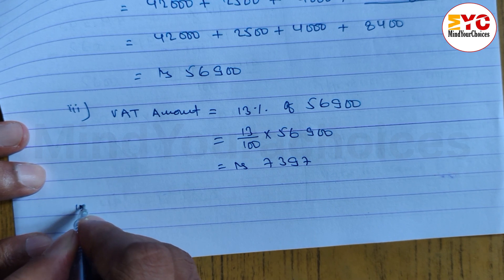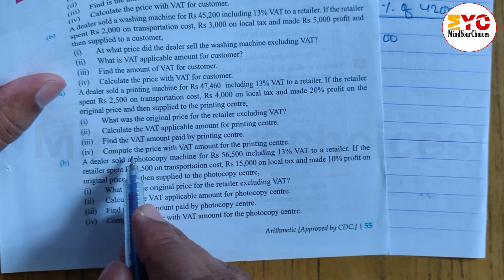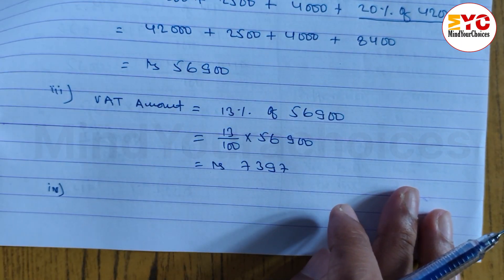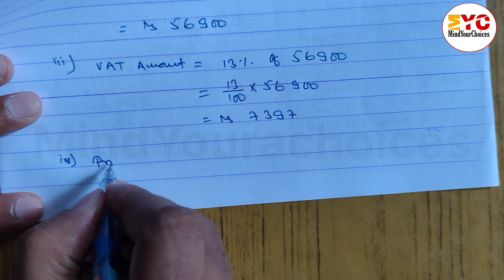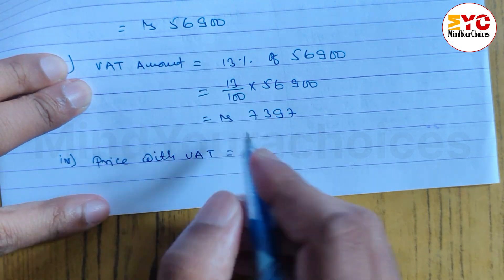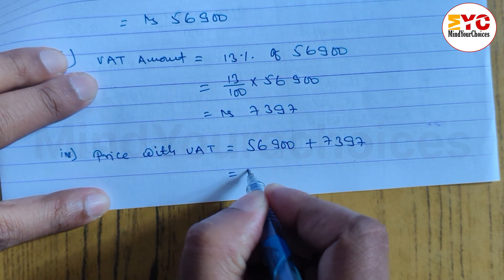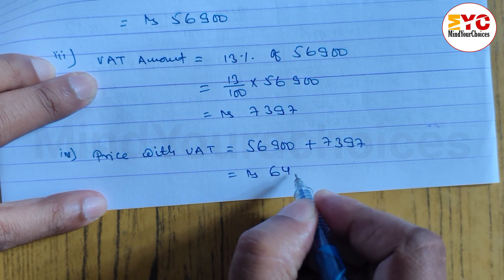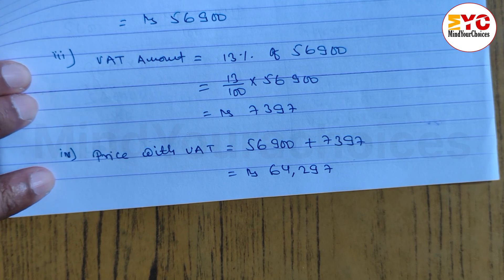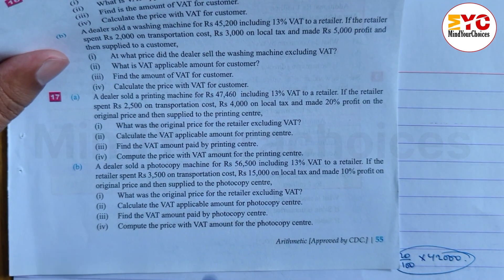Now question number four: compute the price with VAT for the printing center. Price with VAT is equal to the price Rs. 56,900 plus VAT amount Rs. 7,397. When you add we get Rs. 64,297. Rs. 64,297 is the final price.